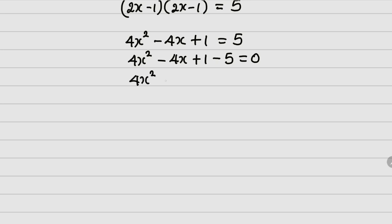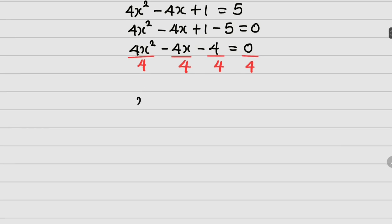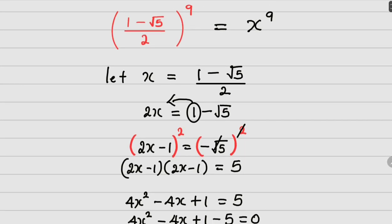This gives 4x squared minus 4x minus 4 equals 0. Now let me divide all terms by 4. The expression reduces to x squared minus x minus 1 equals 0. Now recall, we said let x equal (1 minus root of 5) all over 2, and it means that we are looking for x raised to power 9.